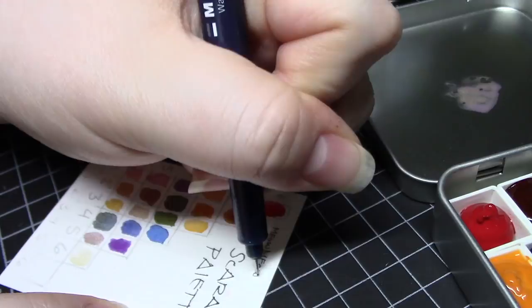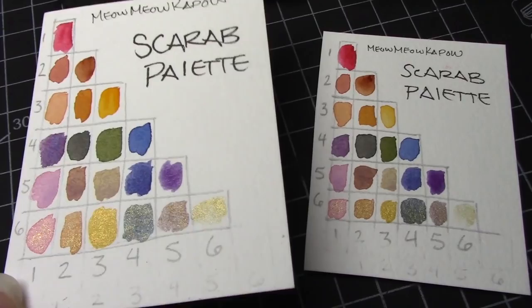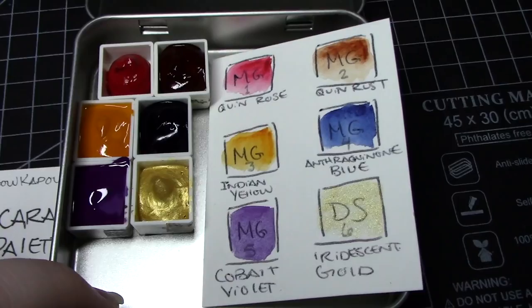As for this project, it's a three and a half inch square metal custom watercolor palette with six colors inside, including five from M. Graham and one from Daniel Smith. So, if you wanted to try M. Graham paints, this may be a good time to do so. The colors are Quinacridone Rose, Quinacridone Rust, Indian Yellow, Anthroquinone Blue, Cobalt Violet, and Iridescent Gold. The only one that's from Daniel Smith is the gold. Everything else is M. Graham.